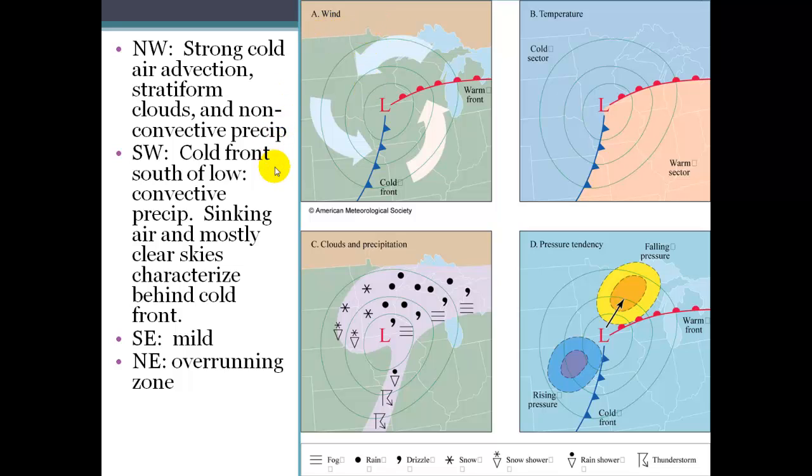If we look in the southwest portion of the storm, which is down in this area here, we have the cold front, which is to the south of the low pressure cell. And here we've got that cold air displacing the warm air. So we have rapid uplift of the warm air. And right in front of the cold front, you're going to see thunderstorms. So the symbols here, you can read what they mean across the bottom. We're going to see our thunderstorms right in front of that cold front.